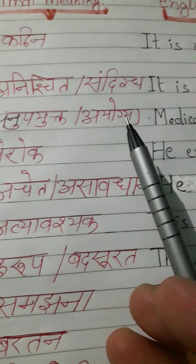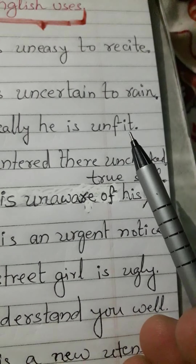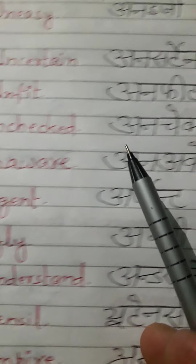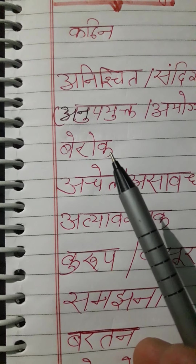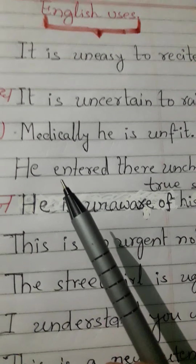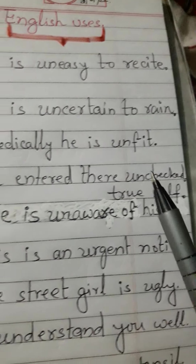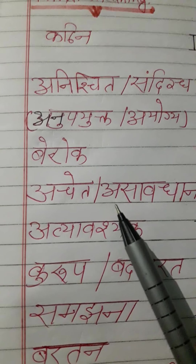Third word: unfit. Correct pronunciation is unfit. Its Hindi meaning is 'anupyukt' or 'ayogya'. Use in sentences: medically he is unfit. Next word: unchecked. It is pronounced as unchecked. Unchecked means 'baroktok' in Hindi. Use in sentence: he entered there unchecked.